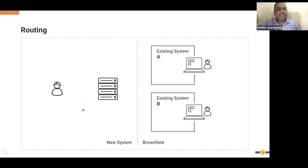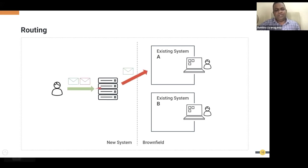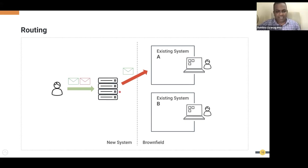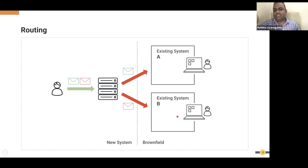For routing, let's assume you are getting messages and you have to read some message property, message body, or URL, and then route the message to different systems. In this example, green color messages go to system A, red color messages go to system B, and routing handles the integration accordingly.